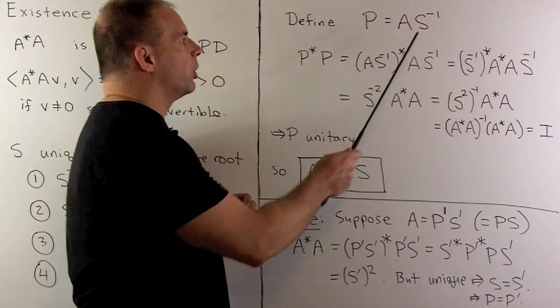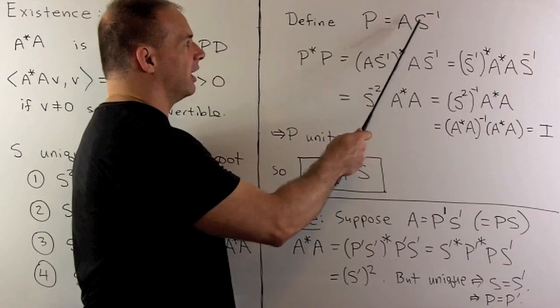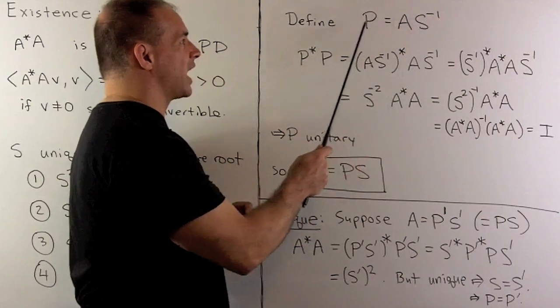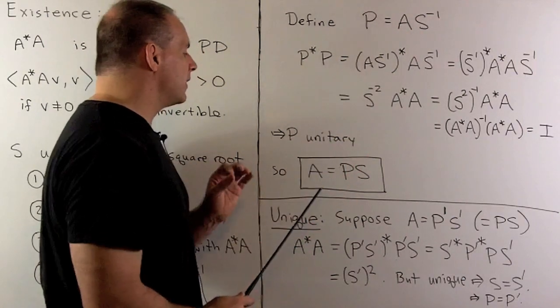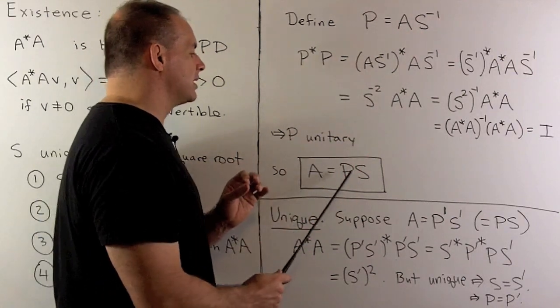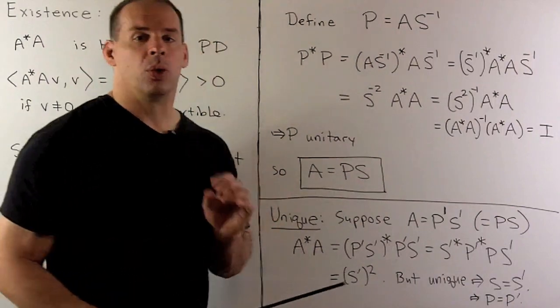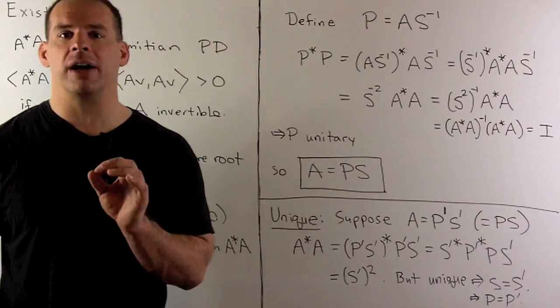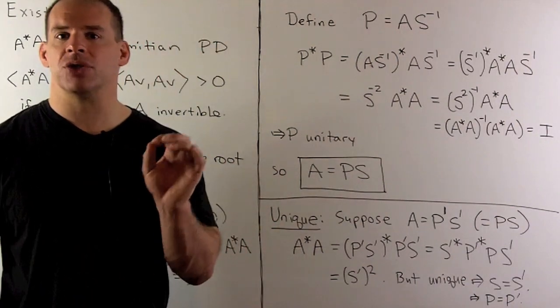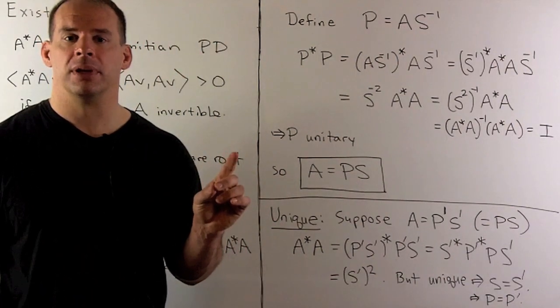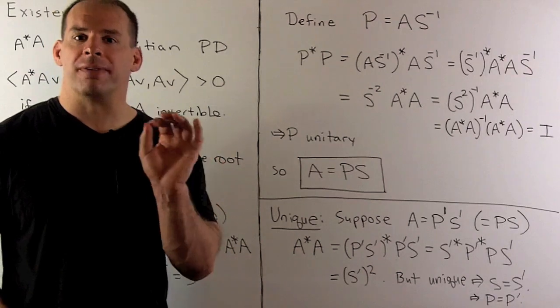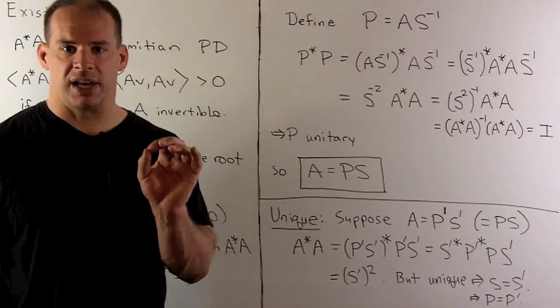Pushing S inverse to the other side as S gives us A equals P times S, where P is unitary and S is Hermitian positive definite. So our factorization exists.